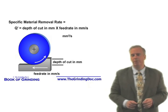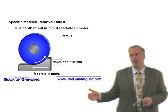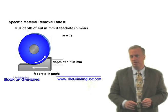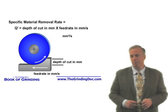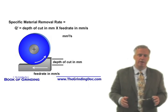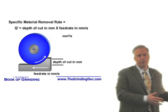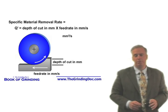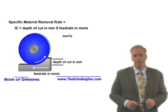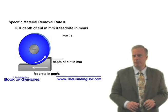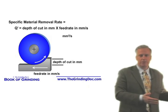If I go to a company and they're grinding at around five, I say okay, that's a respectable number. If they're grinding at 10, I say you guys are pushing your luck a little bit, but maybe you're pulling it off. If I do the calculations and they're only grinding at a material removal rate of one square millimeter per second, I'd say you can do better than that.